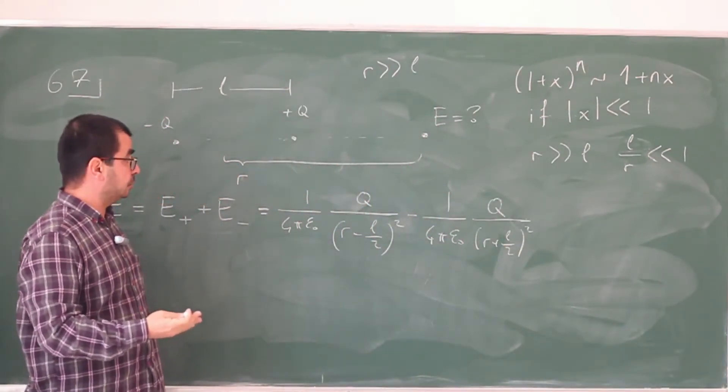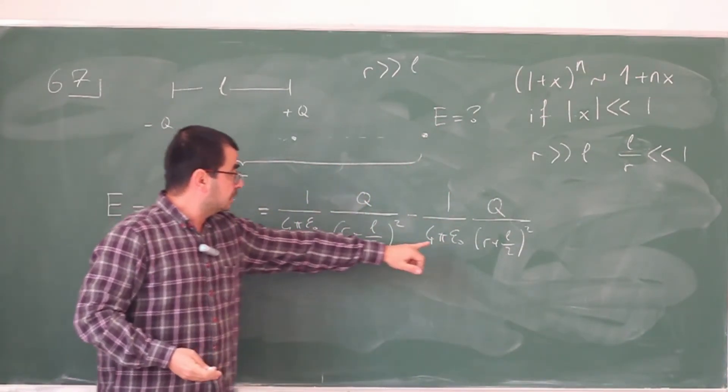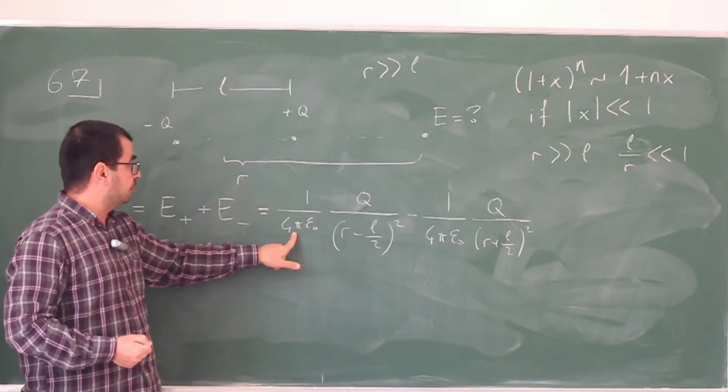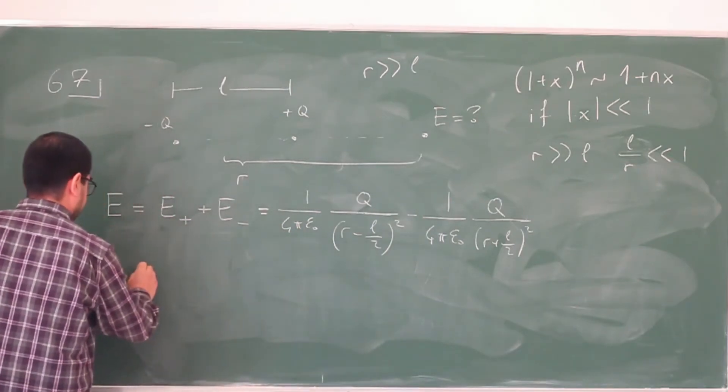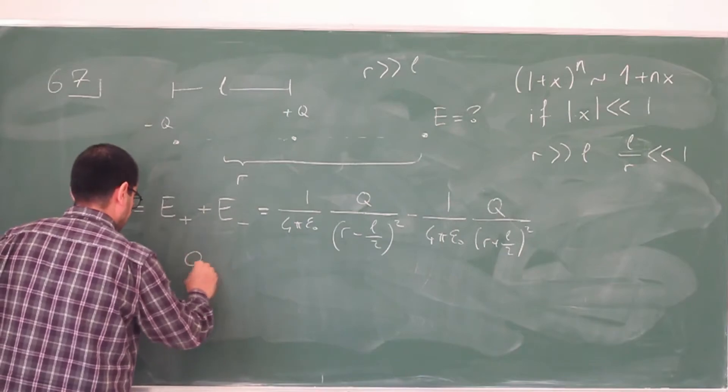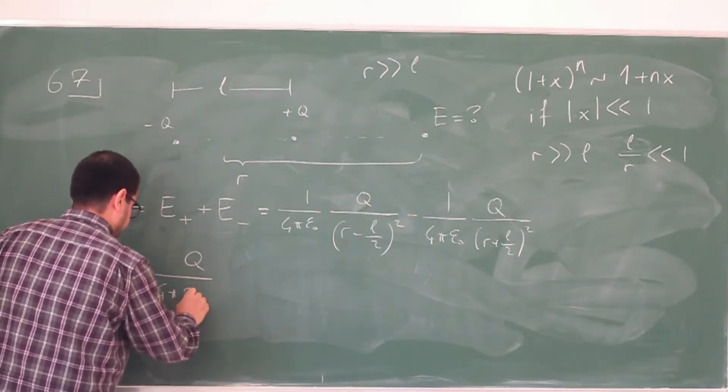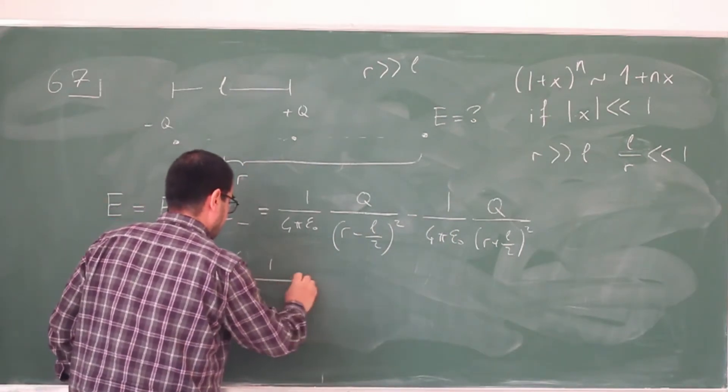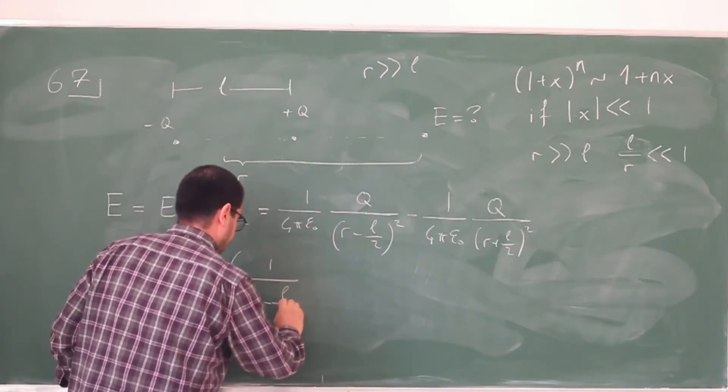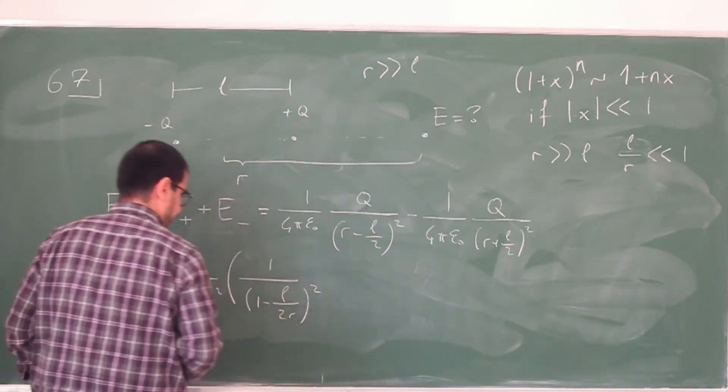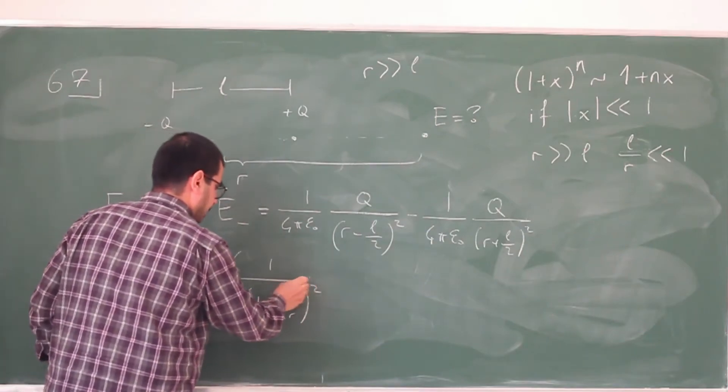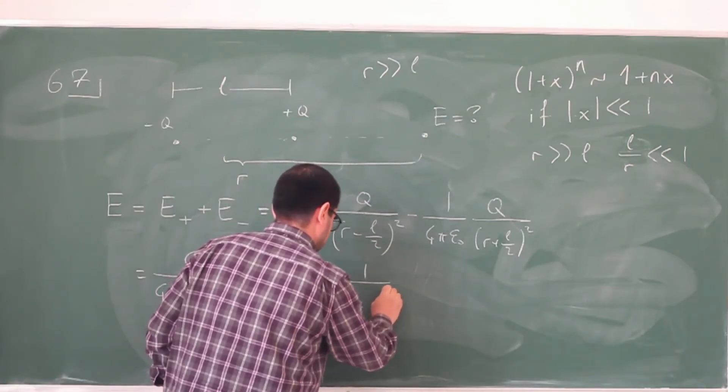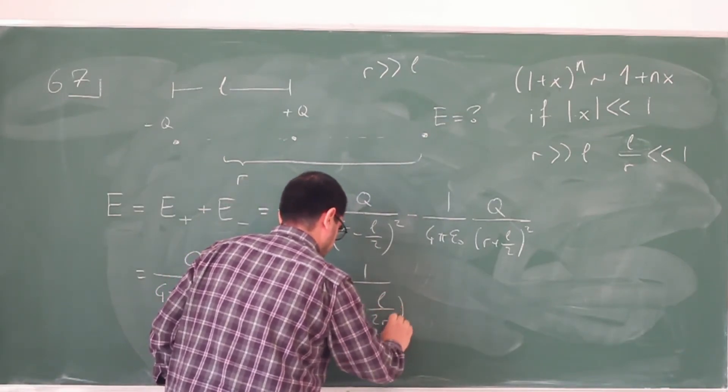And to do that, I'm going to take these into r squared common parentheses. And these are already common, q over 4π epsilon naught are already common. So I can rewrite this expression as q over 4π epsilon naught r squared. Now the first expression is going to be 1 over (1 - L over 2r) squared minus the second expression is going to be 1 over (1 + L over 2r) squared.